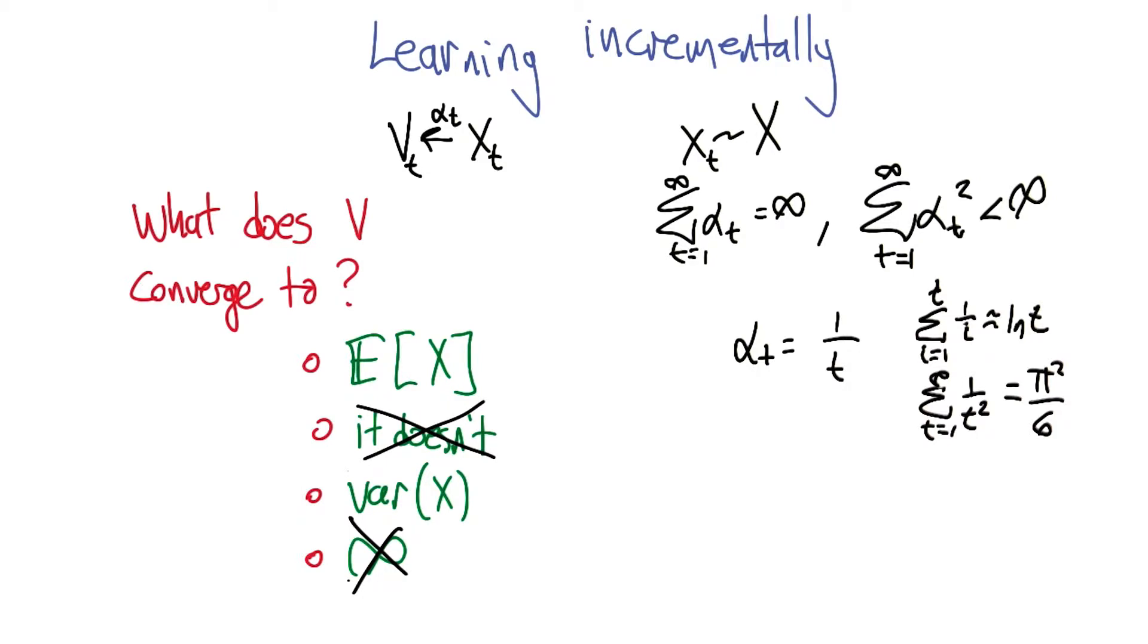So that leaves us with the expected value of x and the expected value of x squared, or the expected value of x squared, whichever one it is that is variance. Okay. So I'm going to go with the expected value of x.